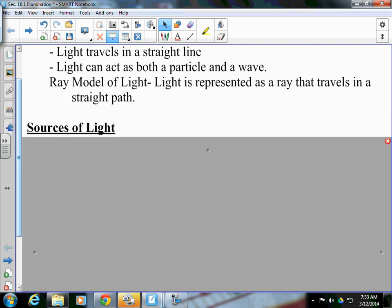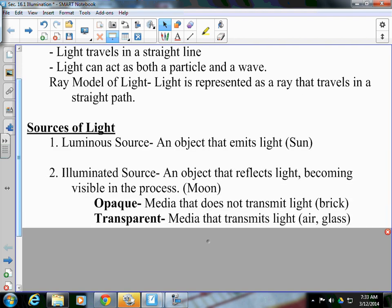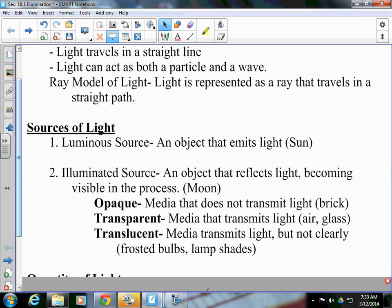More about light, sources of light. When we talk about sources of light, we have two sources. We have a luminous source, an object that emits light, such as the sun. That's a luminous source.